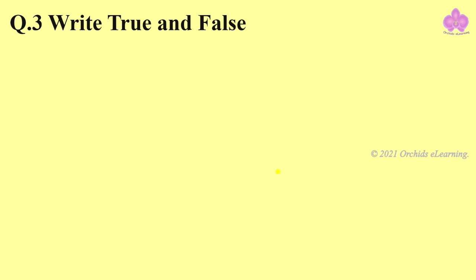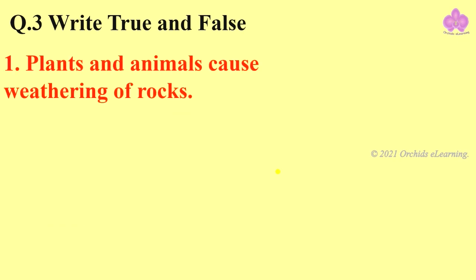Question number three: write whether the following statements are true or false. First statement: plants and animals cause weathering of rocks. It is false.